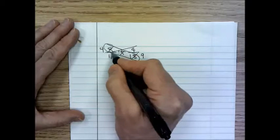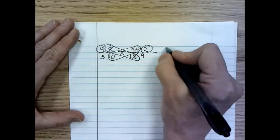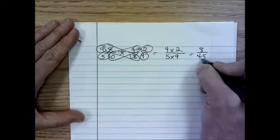This would become a two. This would become a five. So now I have four times two. And in the denominator, five times nine. And that would give you eight over forty-five.